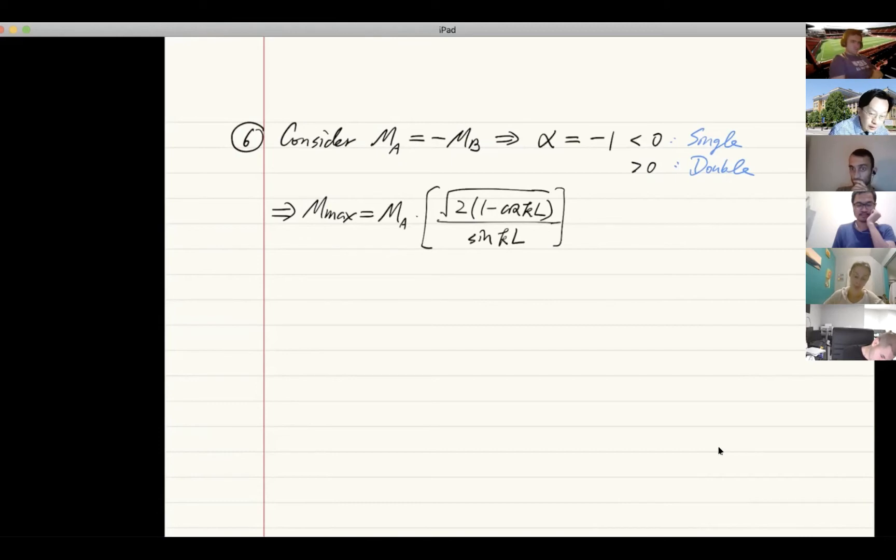Just plug in minus one for alpha, and this will become just MA times the square root of 2 times 1 minus cosine KL, divided by sine KL, given that you have some axial force P greater than zero. If you plug in the axial force P, you can determine the numeric value of sine KL and cosine KL. K is just force dependent, P dependent. Now if you look at these two parts, we recognize that this is the expression that before I did not show you. I said there's just some expression—now I'm giving you the expression.